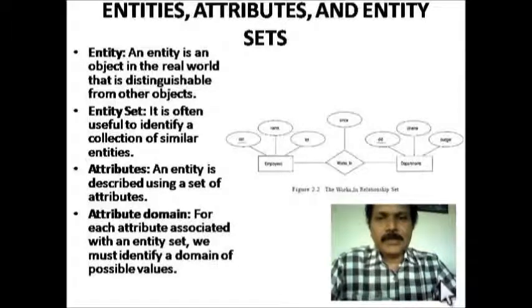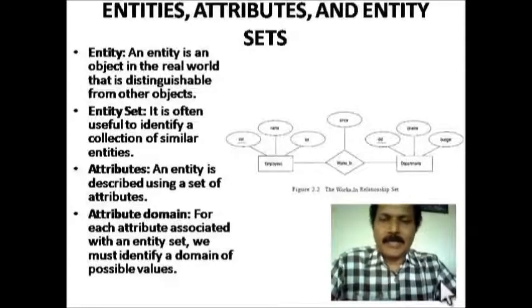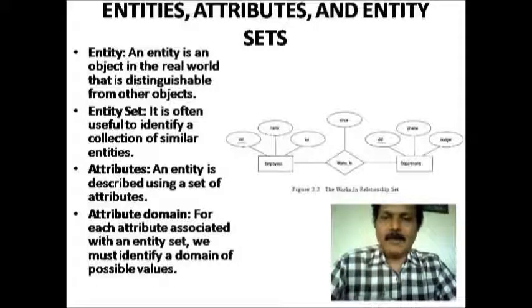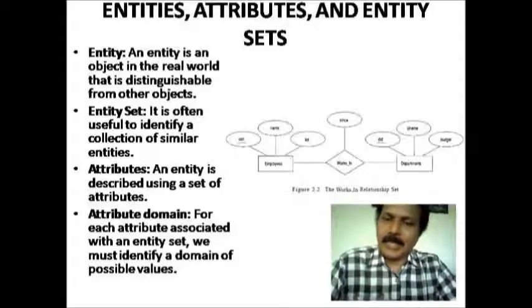Entities, attributes and entity sets. Any object can be represented in the form of entity and the group of entities becomes an entity set. The entities are always represented in the form of rectangles. The different entities are connected with a diamond symbol which is called as a relationship set. The entities are identified with the properties which are called as attributes. The attributes are represented in the elliptical shapes. They are called attributes. So any database and its relations can be depicted with the help of ER diagrams that is entity relationship diagrams, ER diagrams.